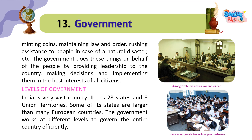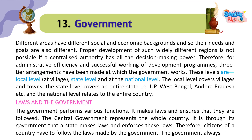Levels of Government. India is a very vast country. It has 28 states and 8 union territories. Some of its states are larger than many European countries. The government works at different levels to govern the entire country efficiently. Different areas have different social and economic backgrounds, and so their needs and goals are also different. Proper development of such widely different regions is not possible if a centralized authority has all the decision-making power. Therefore, for administrative efficiency and successful working of development programs, three-tier arrangements have been made: local level at village, state level, and national level.